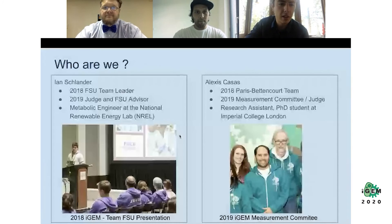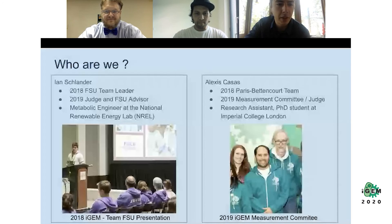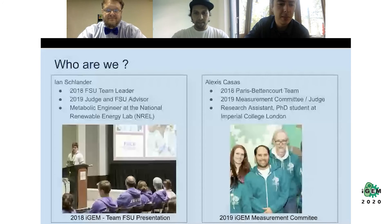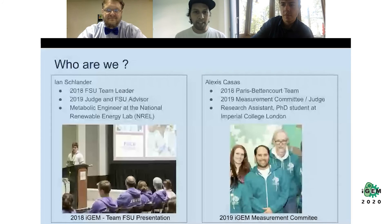My name is Ian Schlander. In 2018 I was introduced to iGEM as a pre-med student and fell in love with synthetic biology as FSU team leader. I became a 2019 judge and FSU advisor — they won the gold medal for the 2019 competition. I have since transitioned to metabolic engineer at the National Renewable Energy Lab.